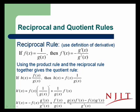Or sometimes it's called low d high minus high d low over low squared. g of x times f prime of x minus f of x times g prime of x over g squared of x.